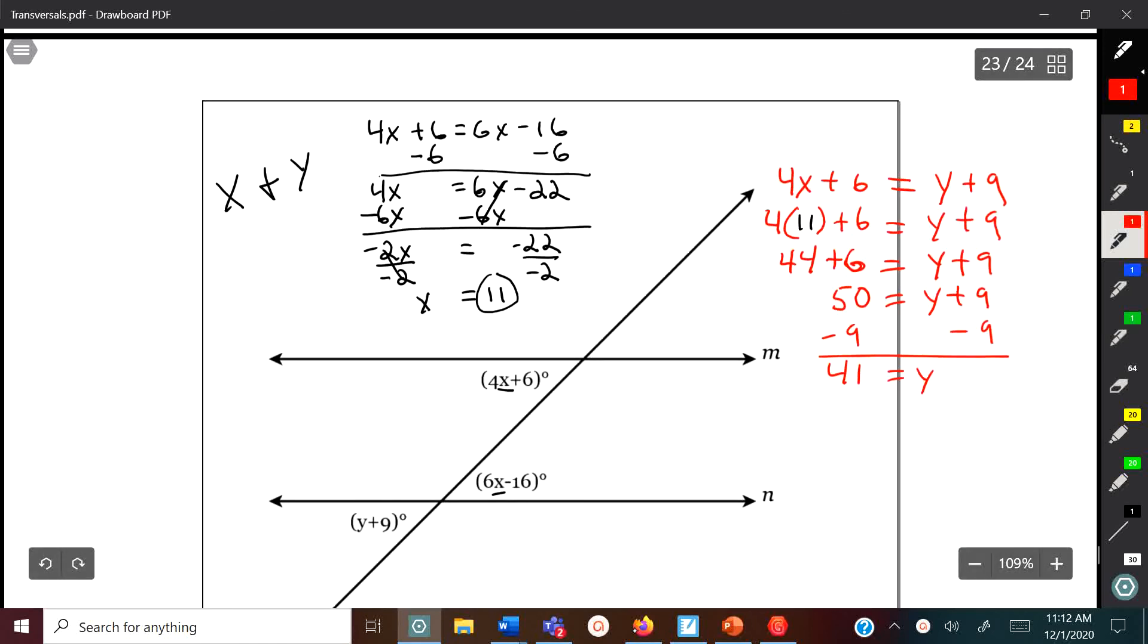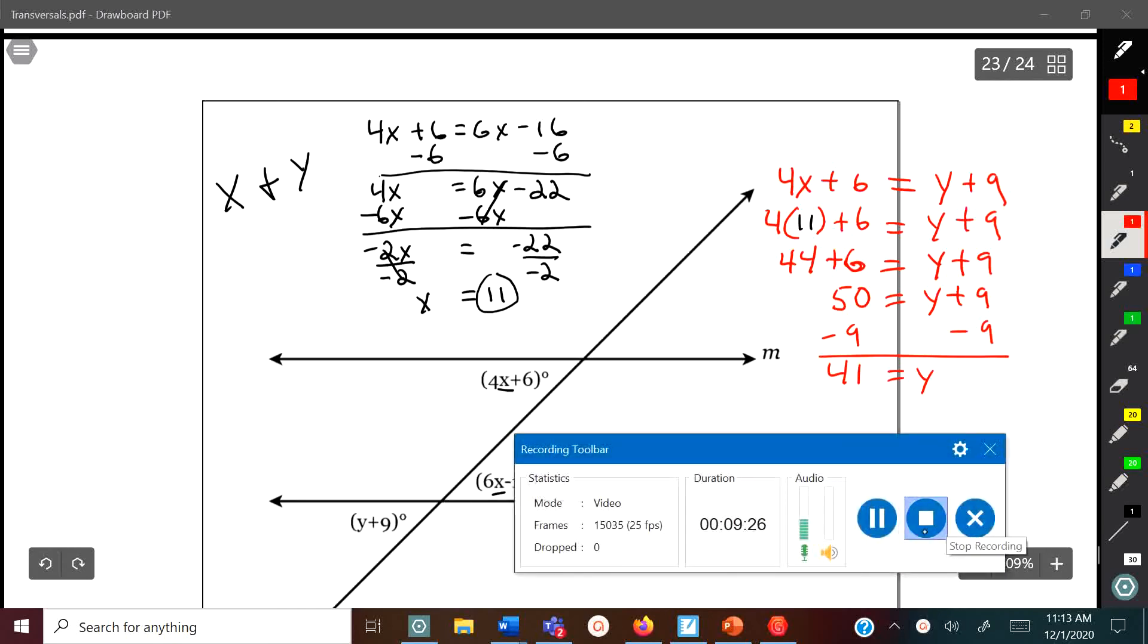We get our answer: x is 11 and y is 41. Sometimes you'll get some problems like this that are just a tad bit more complicated, but do not stress. Stay principled, make sure you look to see if you got two of the same or one of each. That's pretty much it for using transversals to solve equations. Thank you for checking out my video and have a nice day.